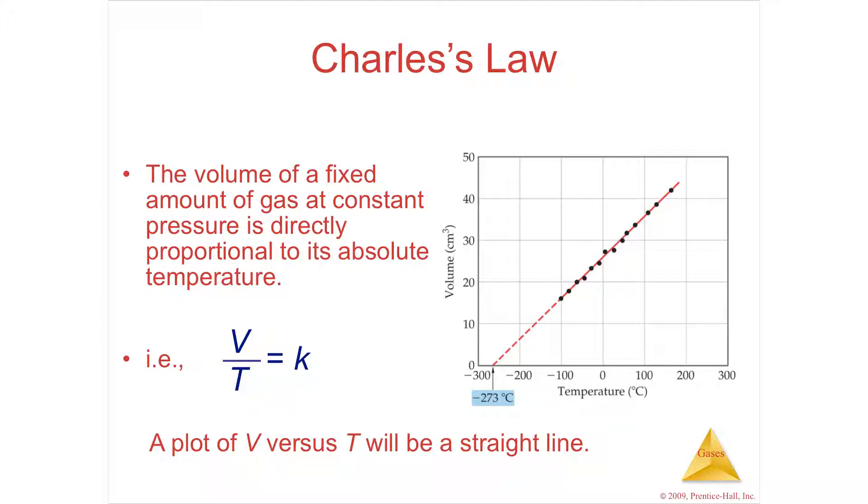Charles, a French fellow, Charles in the 18th century, studied the volume and the temperature of gases. And he found that the volume and the temperature of gases are directly proportional. So imagine solving for volume. I could put this K up here. And as V goes up, T goes up. Anything opposite sides of the equal sign, as one goes up, the other goes up.